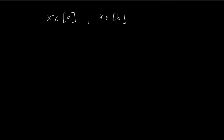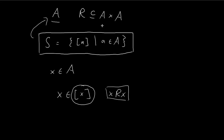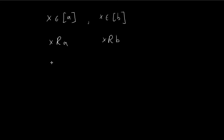If X is a member of class A, then by the definition of an equivalence class, X is related to A. Similarly, if X is a member of class B, then X is related to B. Since R is symmetric, A is also related to X. Now knowing A is related to X and X is related to B, by transitivity of R, this implies A is related to B.